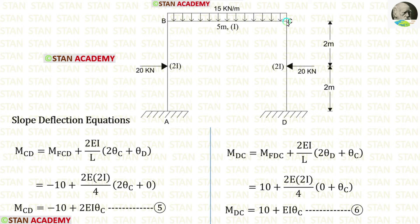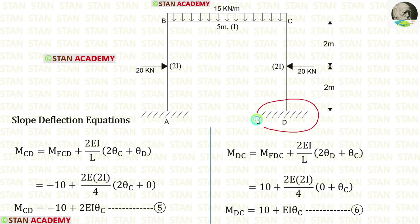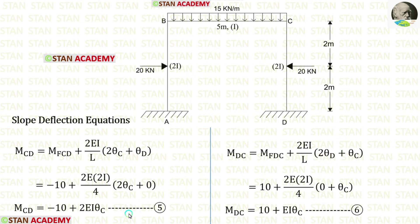Now let us write the slope deflection equations for column CD. We apply the fixed end moments. The moment of inertia for CD is 2I, so we apply 2I instead of I. The length of CD is 4 meters. At point D there is a fixed support, so θD equals zero. Finally, we derive two slope deflection equations for column CD.